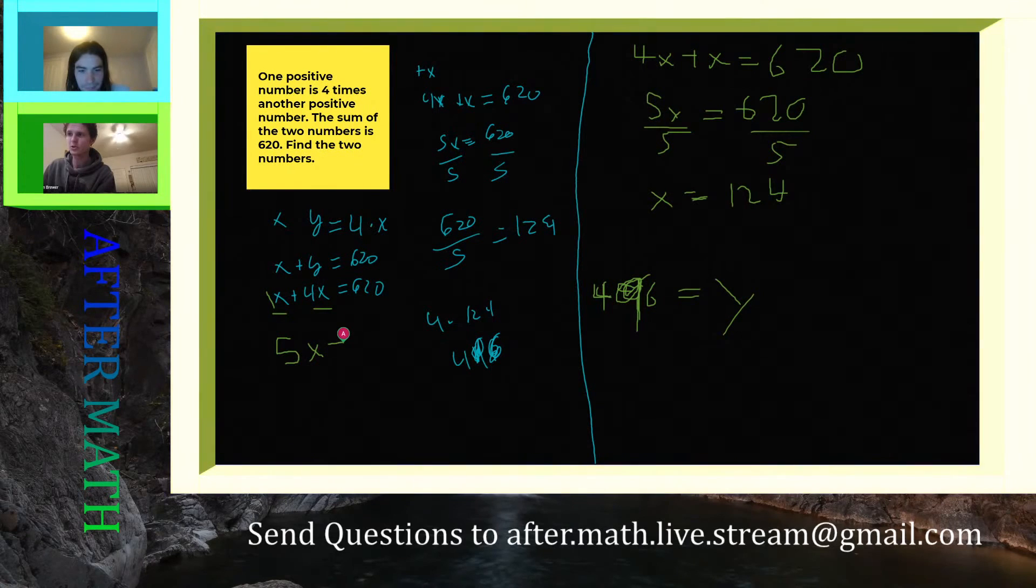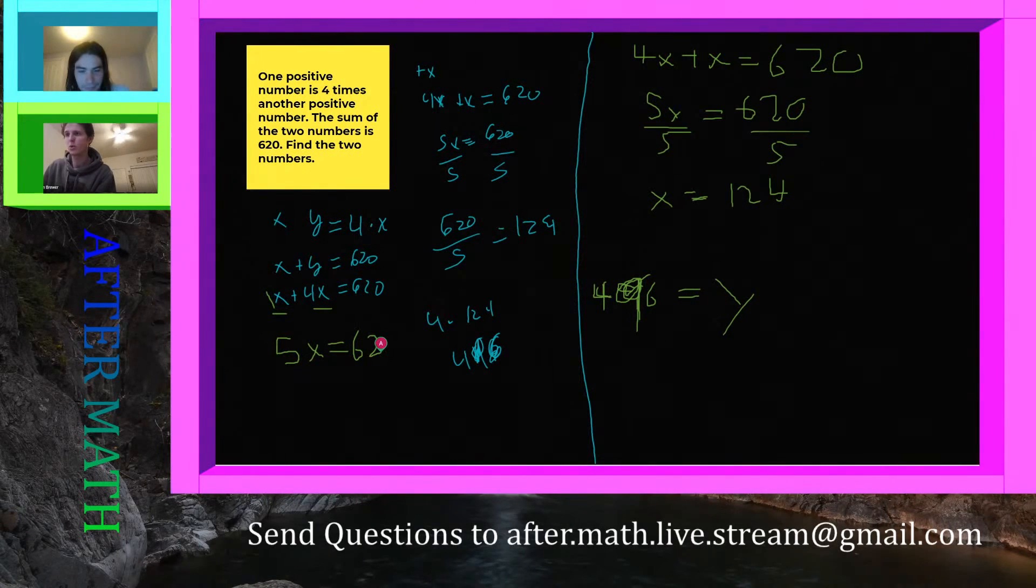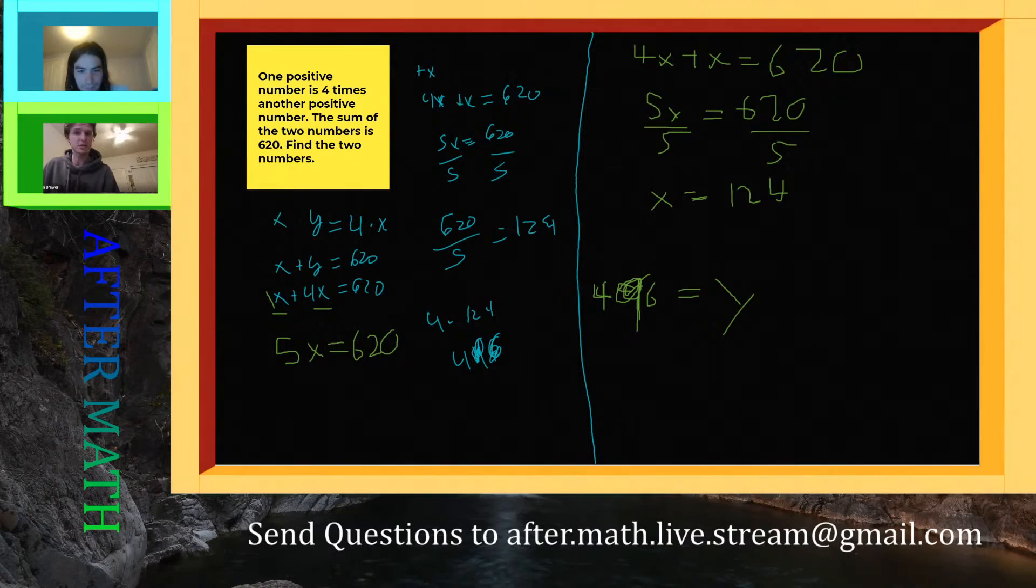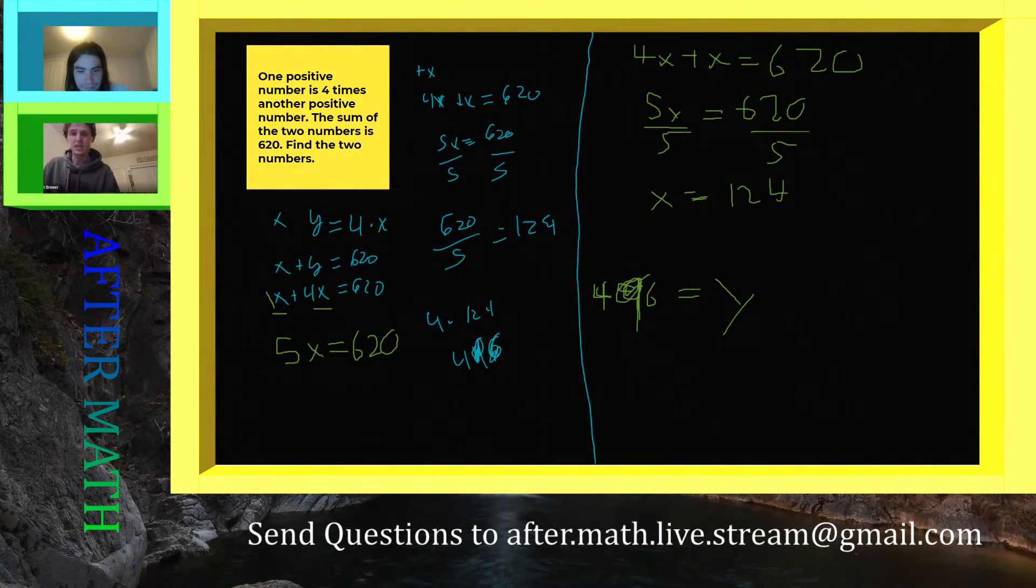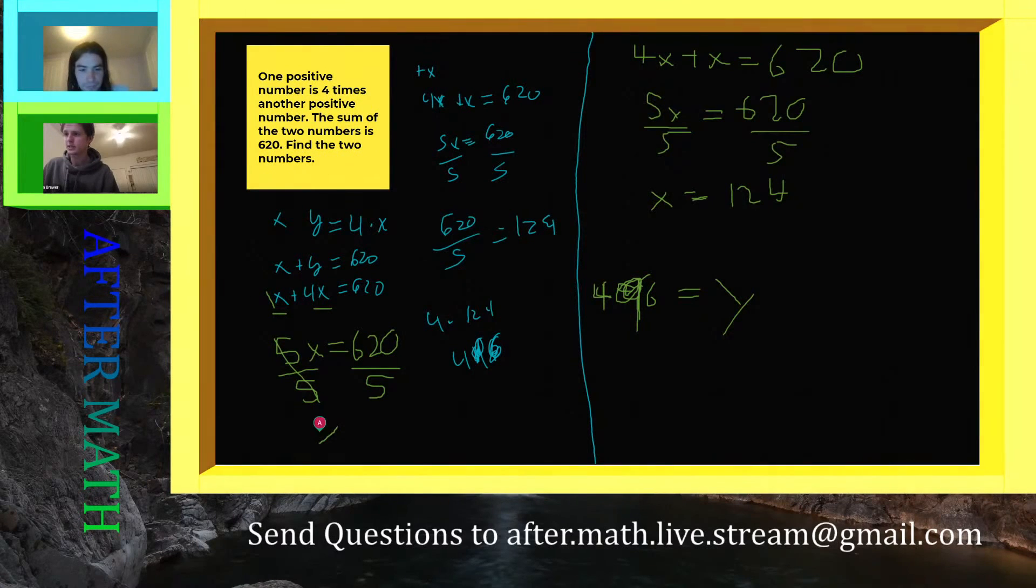5x equals 620. And now this is just a one-step equation where we have to solve for x. By doing that, we do inverse operations. 5 times x, inverse operation would be divide by 5. Those just cancel each other - anything divided by itself is 1. And we divide by 5 over here, we get x equals 124.